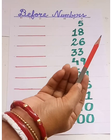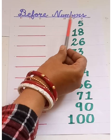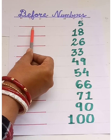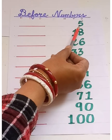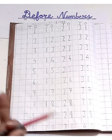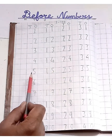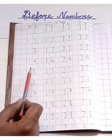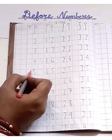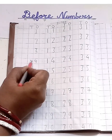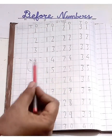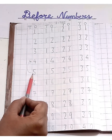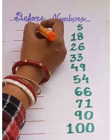Let's see the first sum. Five. Which number comes before five? Let's count backward from five. Five and then four. Yes, four comes before five. So let's write four.